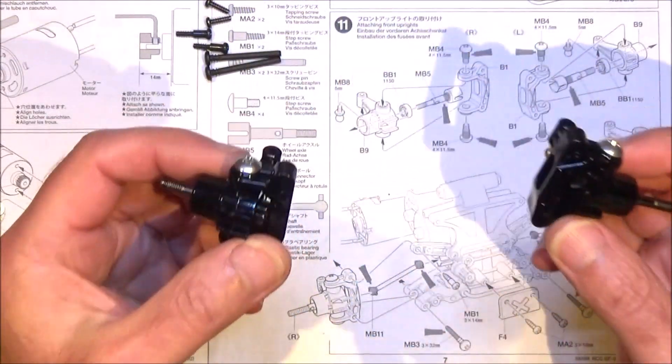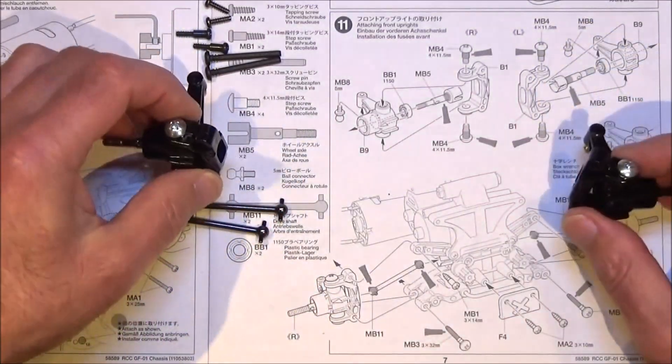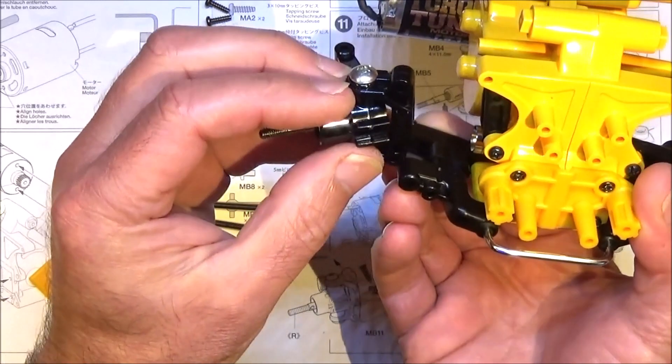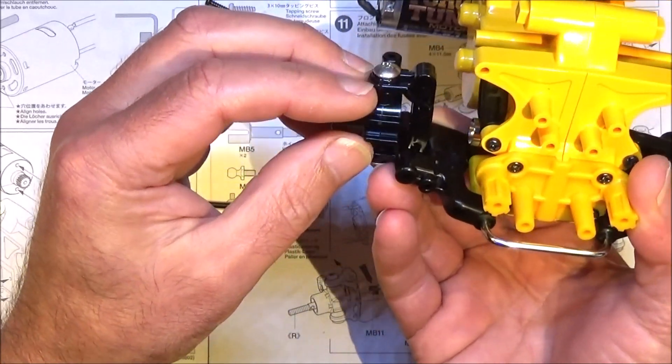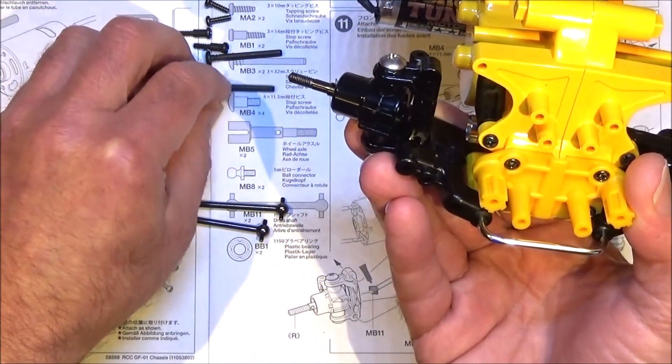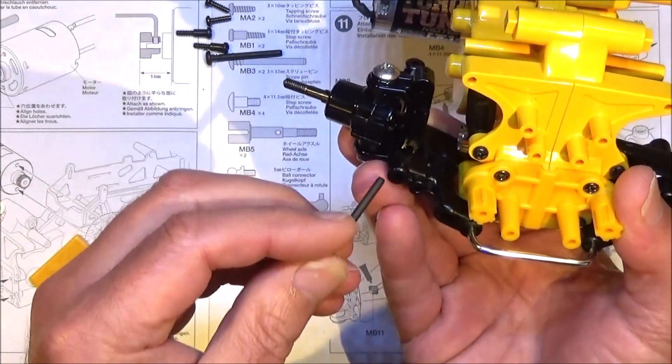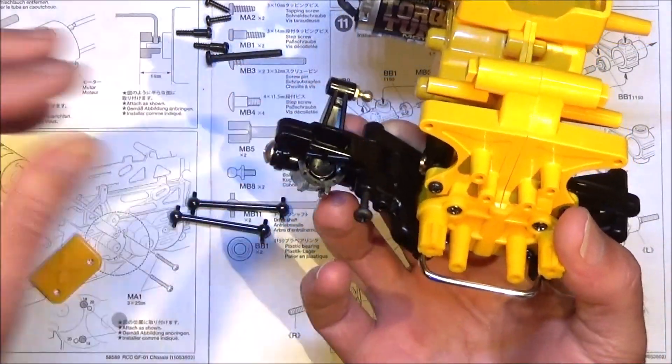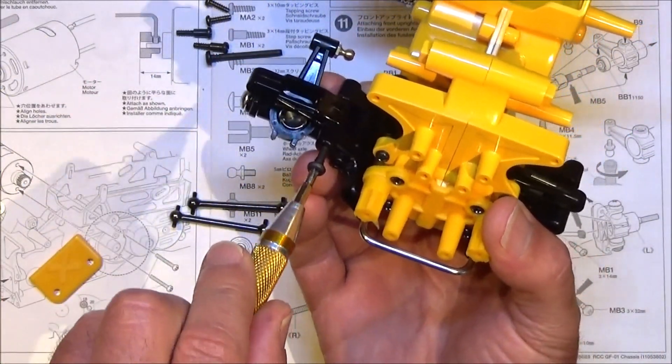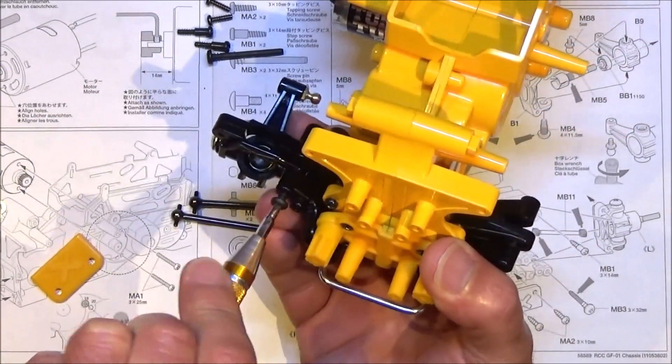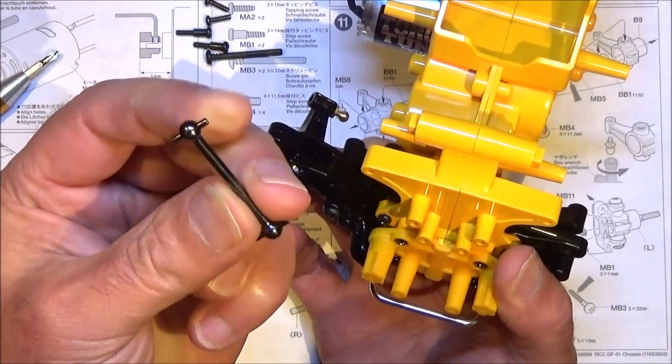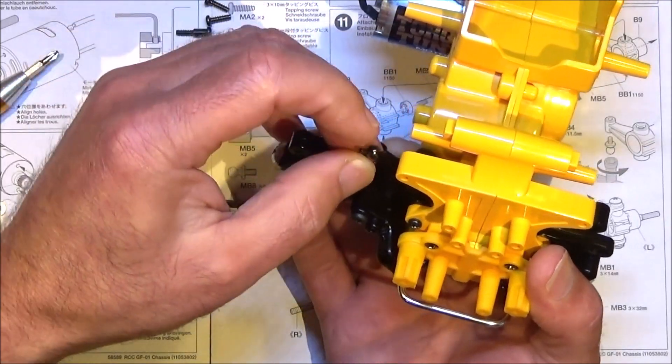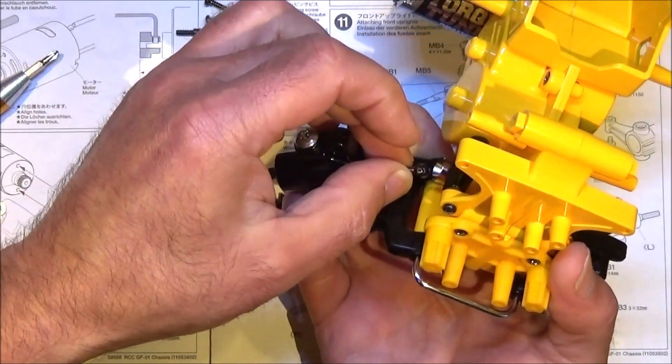Once your uprights are made up, we can get these onto the chassis. Get your upright, put it into the lower arm at the bottom there, get your scoop in, put grease on if you want, slide that through and just nip that up. Get your dog bone, poke that through, get it engaged in the cup and then in the cup in the chassis.